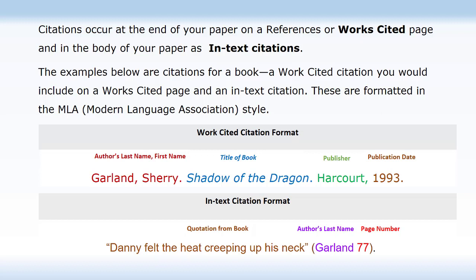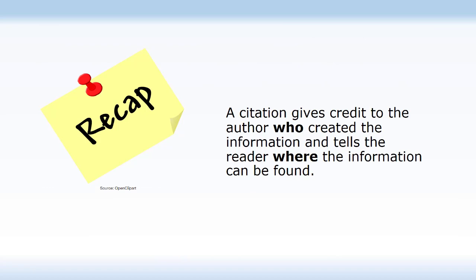When you reference this work in your paper, you would include an in-text citation. The second example shows an in-text citation format. Here, a quotation from the book, 'Danny felt the heat creeping up his neck,' is followed in parentheses by the author's last name, Garland, then the page number, 77, followed by a period. To recap, a citation gives credit to the author who created the information and tells the reader where the information can be found.